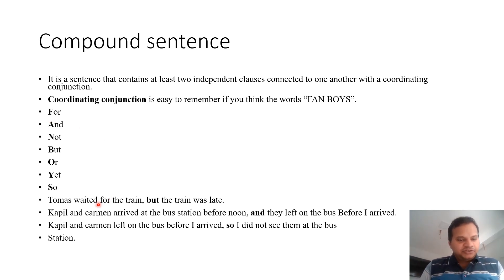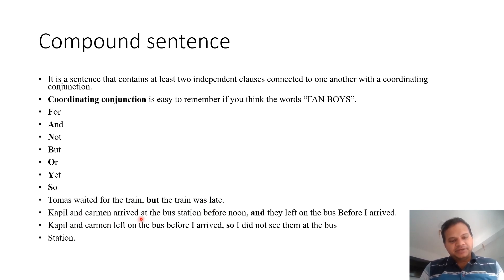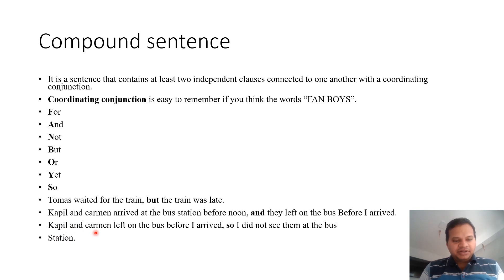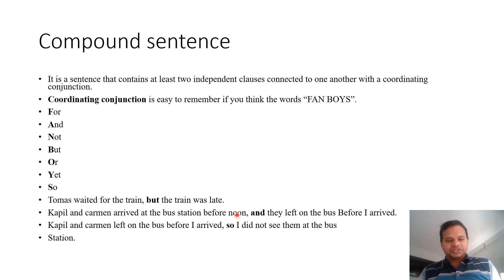For example: 'Thomas waited for the train, but the train was late.' 'Kapil and Kamen arrived at the bus station before noon, and they left on the bus before I arrived.' Here you can see these are all coordinating conjunctions — 'but' and 'and'. Since Kapil and Kamen left on the bus before I arrived, I did not see them at the bus station.